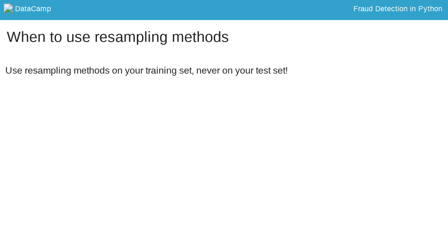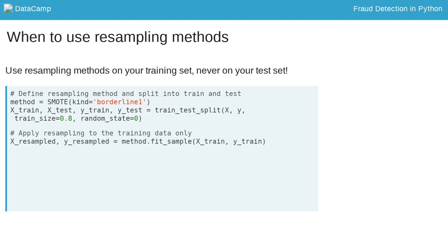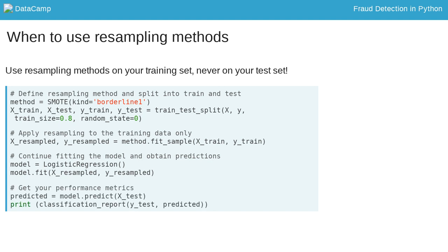One thing to keep in mind when using resampling methods is to only resample on your training set. Your goal is to better train your model by giving it balanced amounts of data. Your goal is not to predict your synthetic samples. Always make sure your test data is free of duplicates or synthetic data, such that you can test your model on real data only. The way to do this is to first split the data into a train and test set. I then resample the training set only. I fit my model on the resampled training data, and lastly I obtain my performance metrics by looking at my original not-resampled test data.